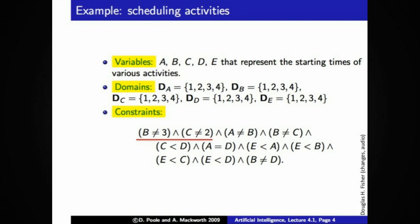I've underlined two unary constraints: b does not equal 3 and c does not equal 2. But most of the constraints listed here are binary constraints — constraints between variables — such as a cannot equal b, or b cannot equal c. We can have higher order constraints like ternary constraints, but very often these can be represented by multiple binary constraints. So for our examples, we will be using binary and unary constraints only.